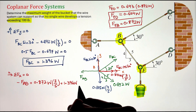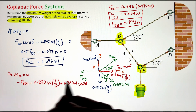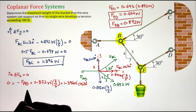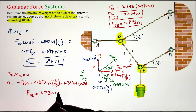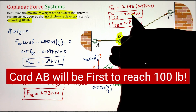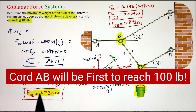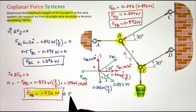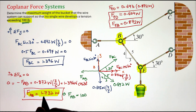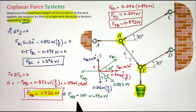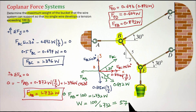Once we have identified the tension in each of the four wires with respect to the weight of the bucket, we need to find which wire experiences the highest tension. Comparing the four coefficients, FAB = 1.732W is the largest. Since we don't want that tension to exceed 100 pounds, we set FAB = 100 pounds and solve for W. Simplifying: W = 100 divided by 1.732, which gives 57.7 pounds. This is the maximum weight of the bucket so that each wire experiences a tension of at most 100 pounds.